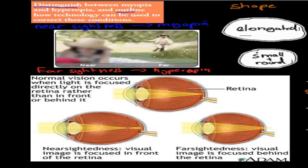Farsightedness means that we can see clearly from far away, but from near we get a blurry image. So if we have farsightedness or hyperopia, that person would see a girl clearly because she's far away, but the girl close by would be blurry. So nearby vision would be blurry, far vision would be clear.